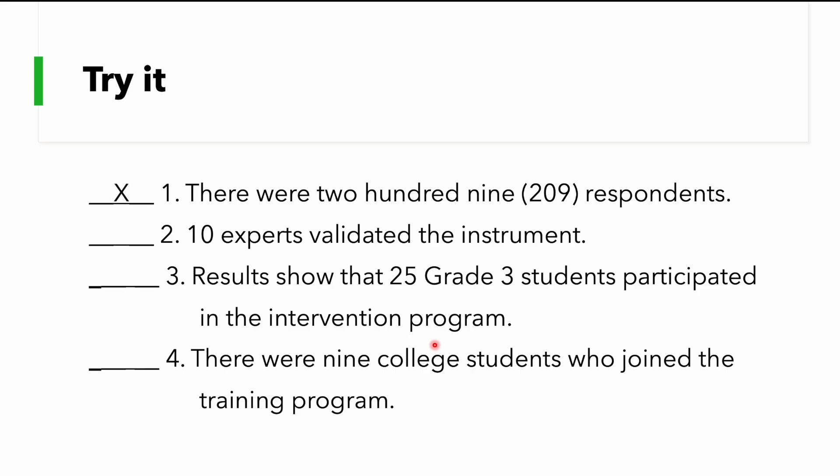For number one, it's an X because we already have here the word plus we have here the open and close parentheses, the numeral. So, it should only be numeral, 209. For number two, it's also an X. Why? Because 10 here should be written as word.